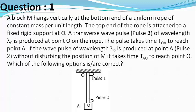If the wave pulse of wavelength lambda 0 is produced at point A, pulse 2, without disturbing the position of M, it takes time TAO to reach point O. Which of the options is or are correct?